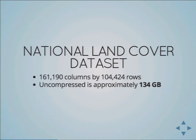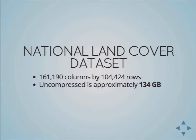The national land cover dataset covers the whole nation. The raster we're working with is about 150,000 columns by 100,000 rows, and uncompressed is approximately 134 gigabytes — it's a big dataset. Usually you'd work with just a subset of it, but an application like Open Tree Map wants to be available for the entire United States. If we have multiple users wanting this dataset from California, Philadelphia, the South, and everywhere all at once, we need this dataset to be highly available. That's definitely a challenge.